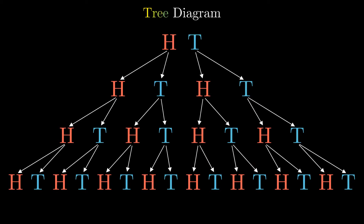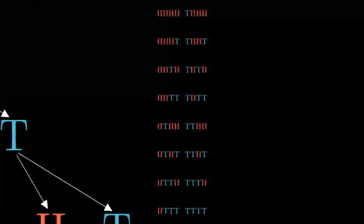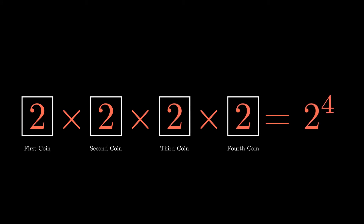The tree diagram starts with the possible outcomes for a single coin — heads and tails — and the following heads and tail branches out from the previous heads or previous tails. The yellow paths represent the possible outcomes listed in the right corner. In total for this experiment there are 16 possible outcomes. The total number of outcomes can be calculated by raising 2 to the power of the number of coins, which equals 2 to the 4th power.